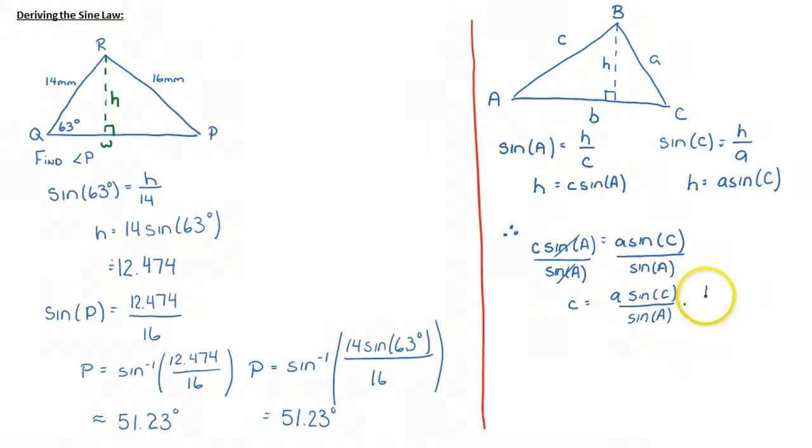And then I'll multiply both sides by 1 over sine c. And I get this beautiful relationship. These sine c's cancel, which is c over sine c is equal to a over sine a.